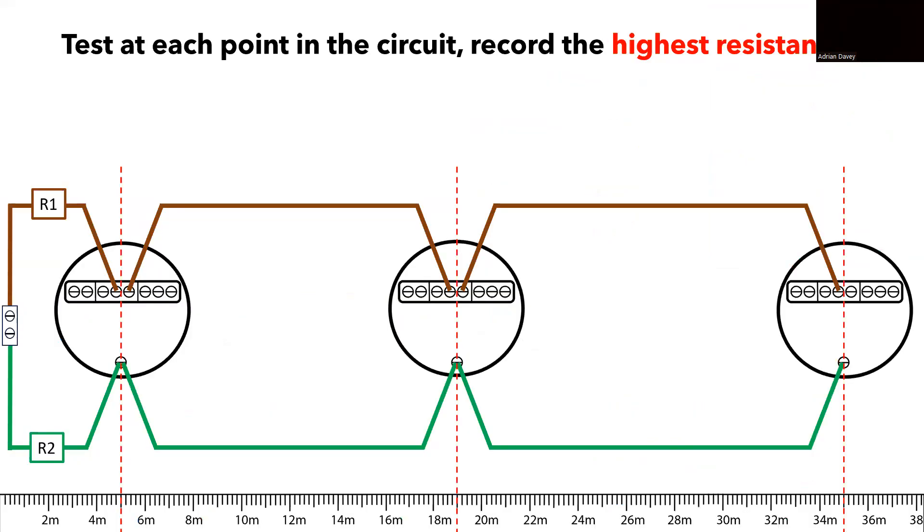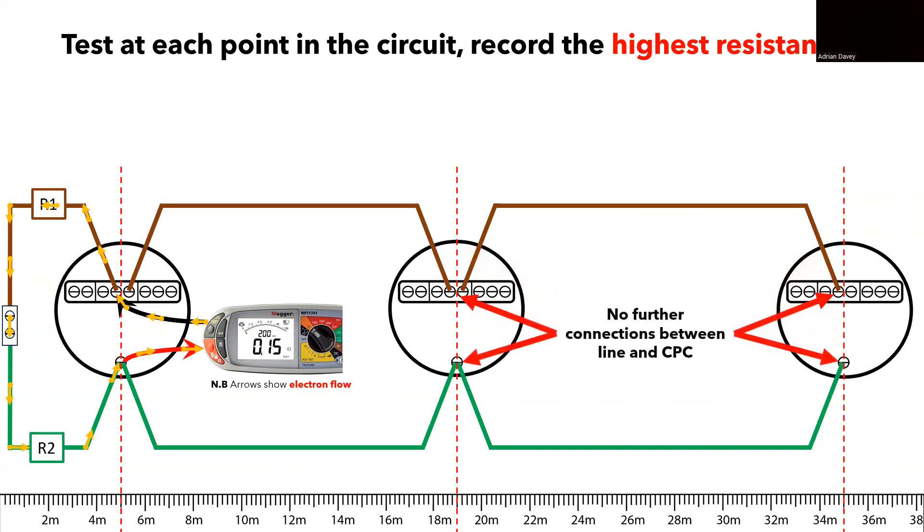Once we connect the low ohm continuity meter into the circuit, the MFT bridges the line and CPC, creating a closed loop. This allows electron flow from the MFT's batteries starting at the negative terminal. The electrons travel around this small circuit we've created, and return back to the meter with a positive terminal and into the battery. The meter then measures the electron flow passing through the MFT and uses Ohm's law to calculate a resistance of 0.151, displaying it on the screen. Since there are no other connections between R1 and R2, there can be no electron flow further into the circuit, therefore we are only measuring this small closed loop upstream of the first pendant. A small loop should produce a small resistance.